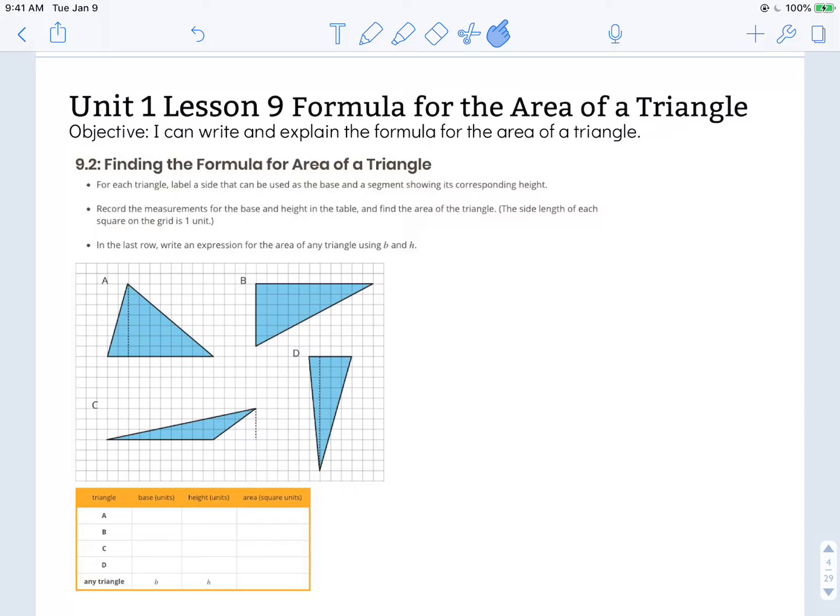For each triangle, label a side that can be used as the base and a segment showing its corresponding height. Record the measurement for the base and height in the table and find the area of the triangle. The side length of each square on the grid is 1 unit.